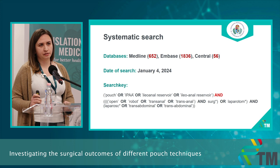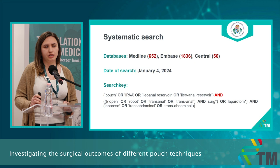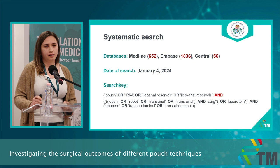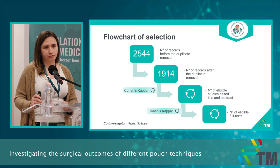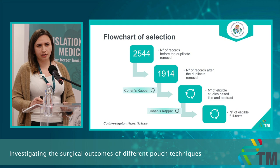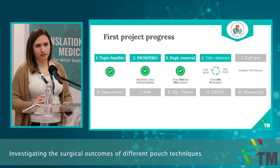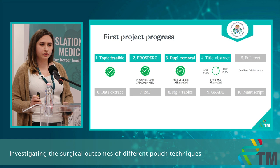We have a search key containing two domains: the first reflects the pouch operation and the second the type of approach. We conducted the systematic search in January. We had 2,544 hits, and after duplicate removal, 1,900 remained. We are working on the title and abstract selection, which is around 80% complete, and we now have 67 included abstracts.